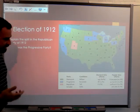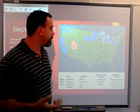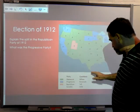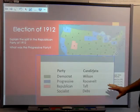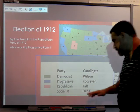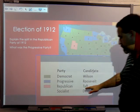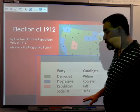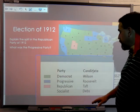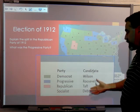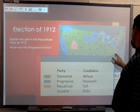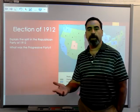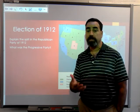Roosevelt then joined the Progressive Party, which was led by Robert La Follette. Being a powerful figure, he ended up undercutting La Follette and took control of the Progressive Party, running for president on the Progressive Party ticket. This split the Republican vote. On the Democratic side, Woodrow Wilson was selected largely as a result of trying to move past William Jennings Bryan, who had just lost another presidential election. Wilson was presented as a more conservative, Southern alternative to Bryanism.